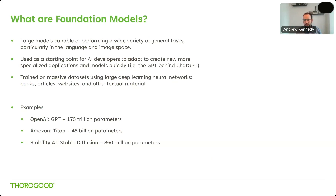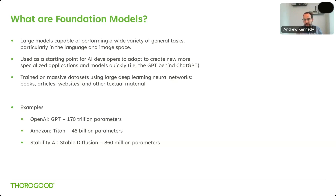Some examples of foundation models: OpenAI has GPT — the most recent GPT-4 has 170 trillion parameters, and they're continually releasing new versions. Amazon has their own foundation model, Titan, with 45 billion parameters. As another example outside the large language model space, Stability AI published models including Stable Diffusion, one of the most popular for images, with around 860 million parameters. There are many more examples available through the AWS platform that Sanjay will touch on later.